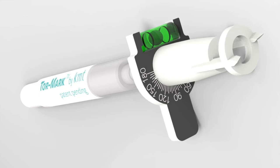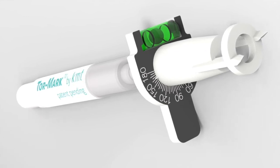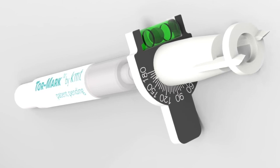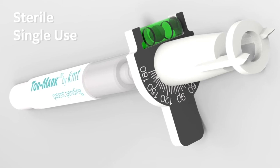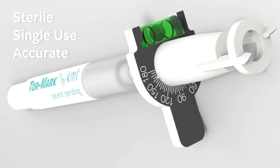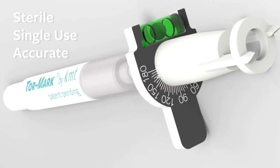This is a marking device to be used with any toric intraocular lens during cataract surgery. Some of the advantages of this device compared to regular standard devices is that it comes sterile, it's a single-use device, it's disposable, and it provides very accurate marks on the eye compared to the standard two-step marking devices.